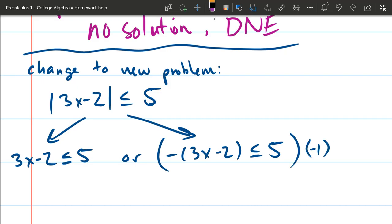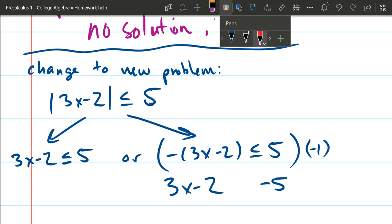That's going to mean negative times negative—the left side is going to become positive: 3x - 2. The right side, 5 times negative 1, is negative 5. But here's the important part: the inequality sign is now going to change from less than to greater than.